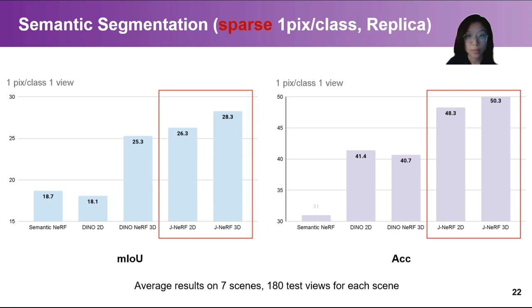Quantitative results show that Jacobi NERF also achieves higher mean IOU and accuracy for the synthesized novel view labels. Compared to the second best method, DINO NERF, Jacobi NERF achieves relatively 11.9% higher mean IOU and 23.6% higher accuracy.